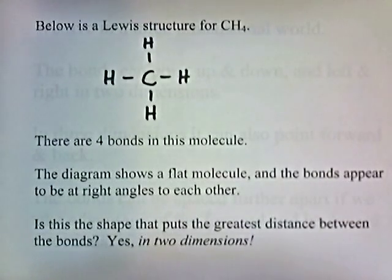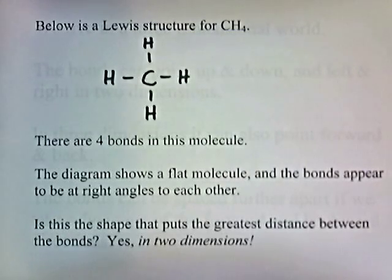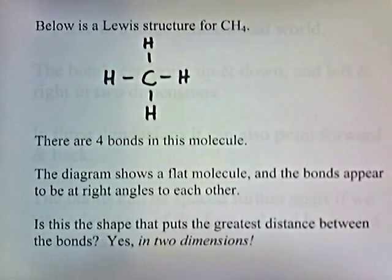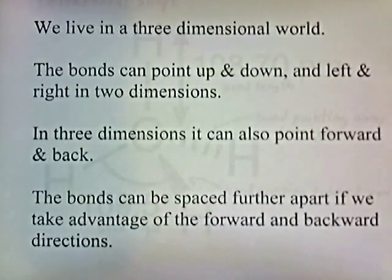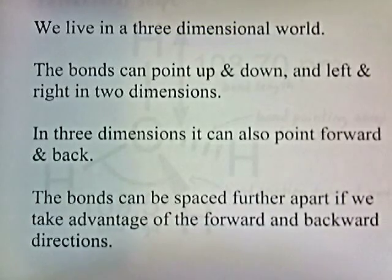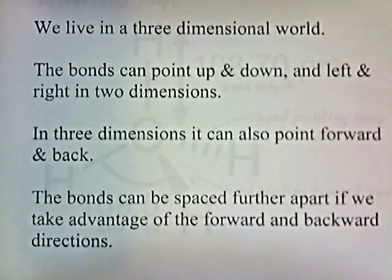Here is a Lewis structure for methane, and there are four bonds in this molecule. The diagram shows a flat molecule, and the bonds appear to be at right angles to each other. Is this the shape that puts the greatest distance between the bonds? Yes, in two dimensions. But we live in a three-dimensional world. The bonds can point up and down, left and right in two dimensions, but in three dimensions, they can also point forward and back. The bonds can be spaced further apart if we take advantage of the forward and backward directions.